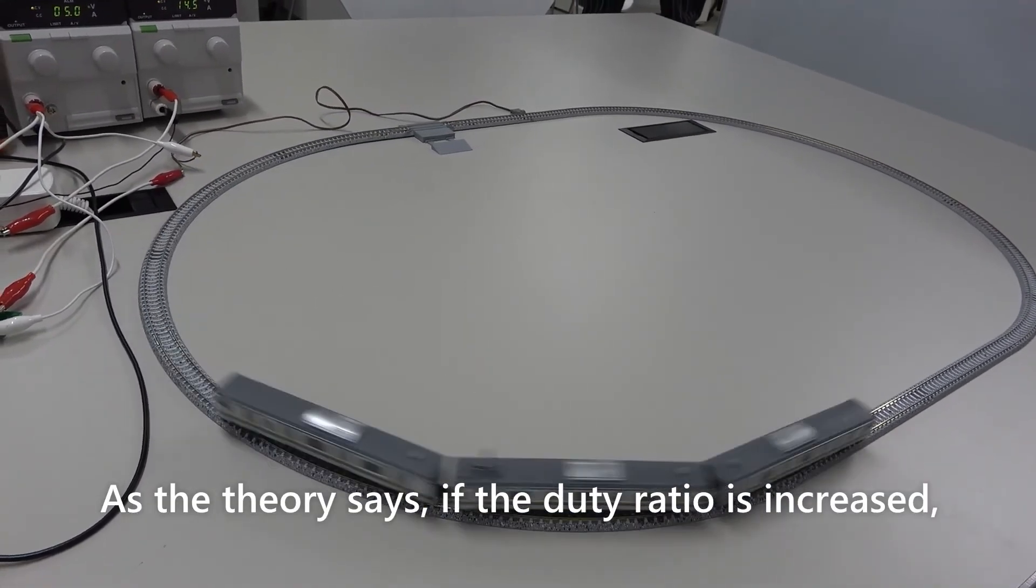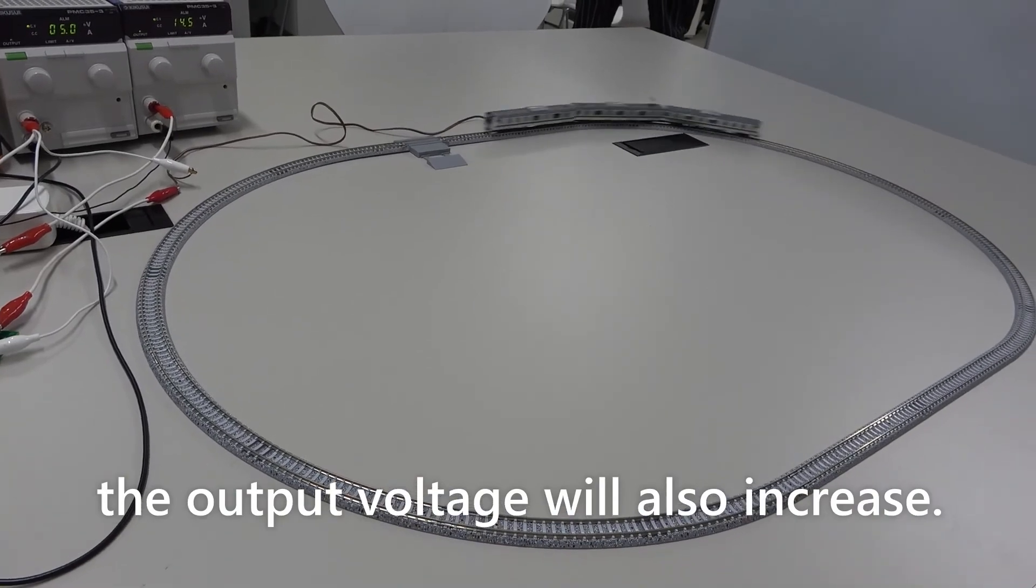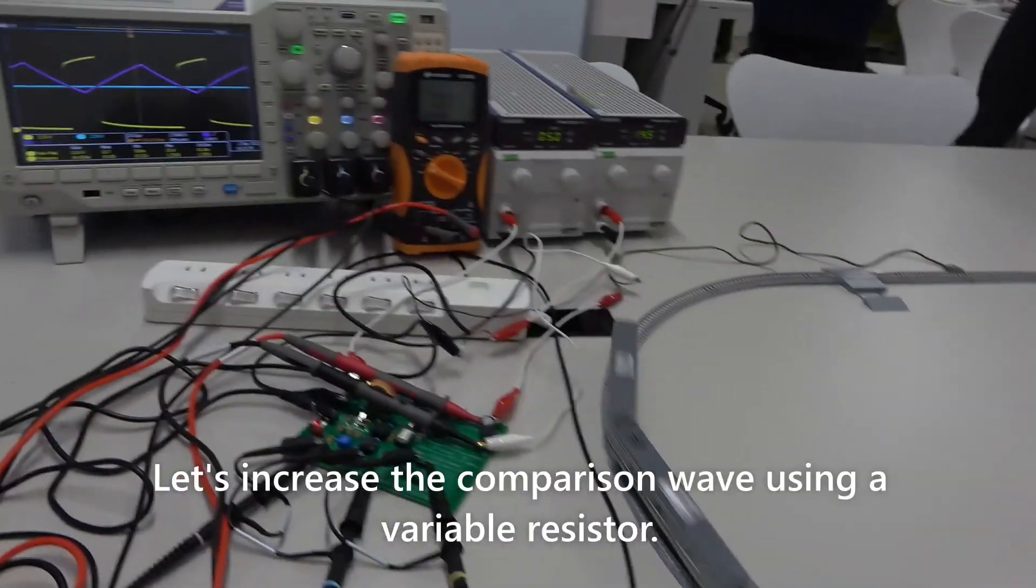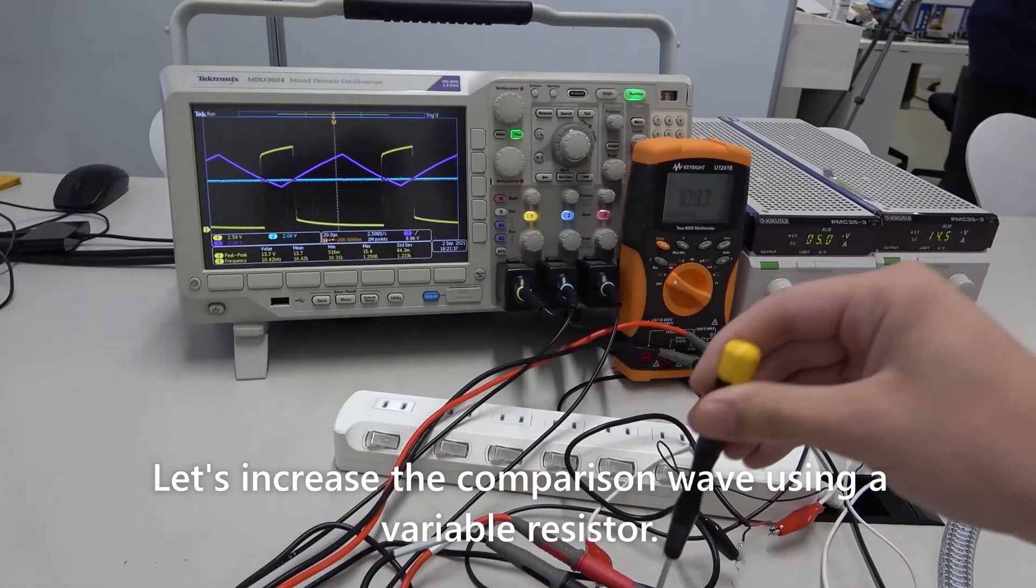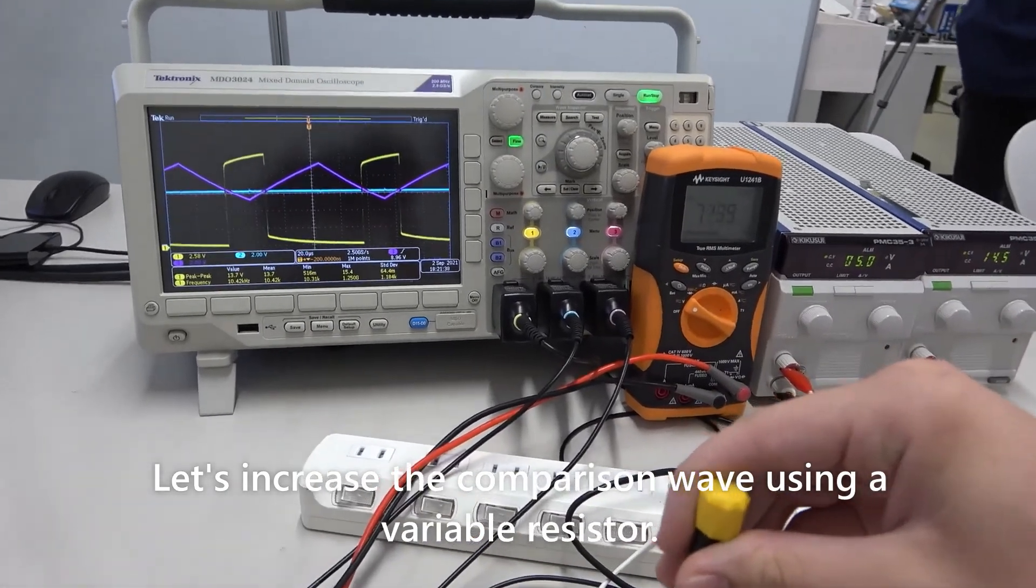As theory says, if the duty rate is increased, the output voltage will also increase. Let's increase the comparison wave using variable resistors.